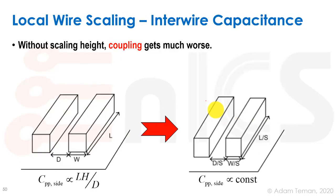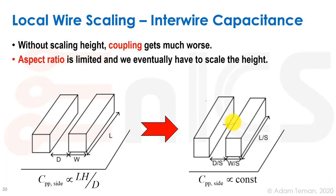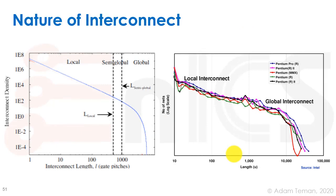But what about interwire capacitance? When we don't scale height, the spacing between wires is going down by s, which makes the coupling capacitance much worse. Also, aspect ratio is limited — we can't keep making wires thinner without eventually scaling the height too, or else these tall thin wires become structurally unstable.